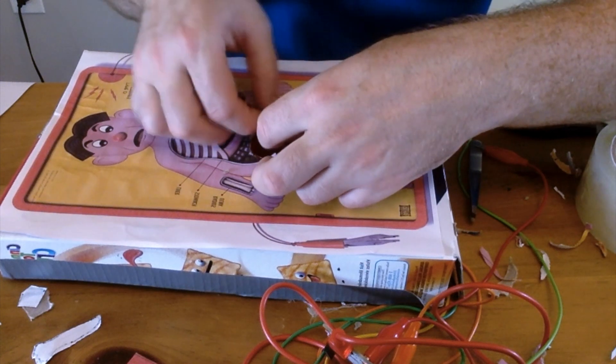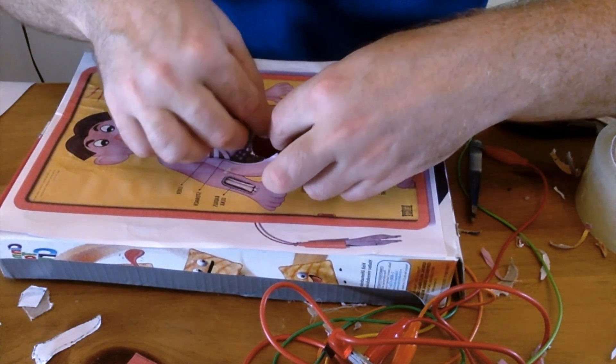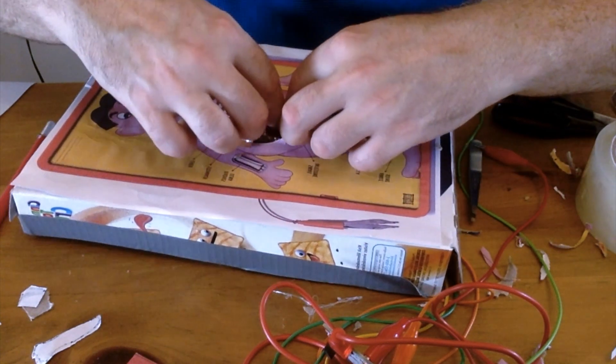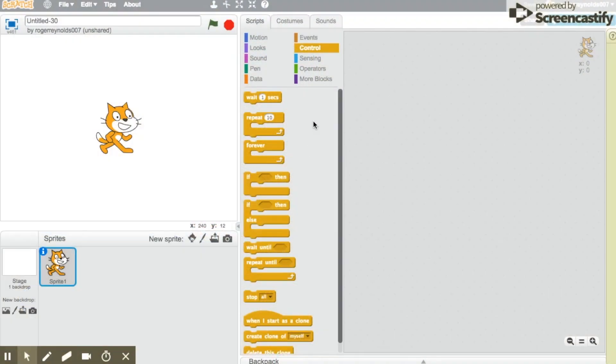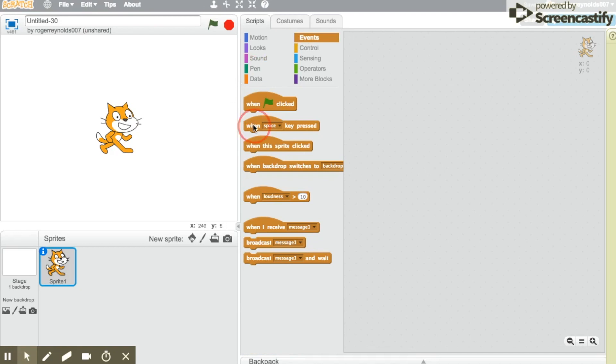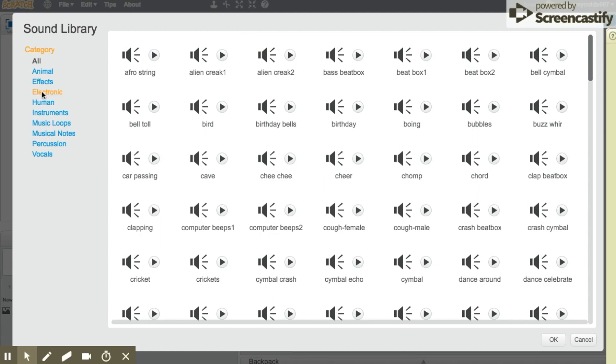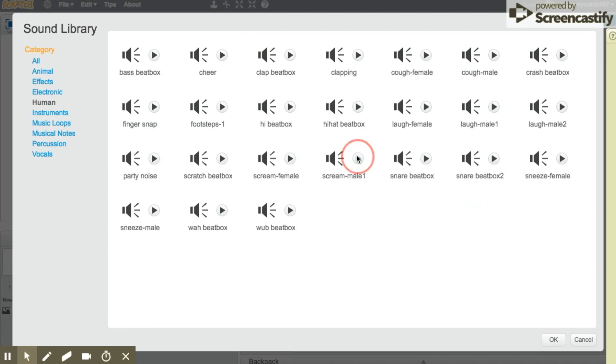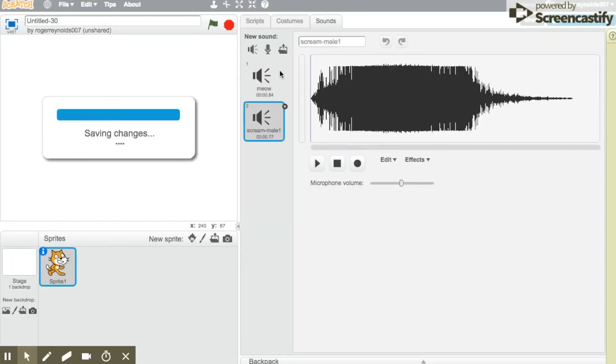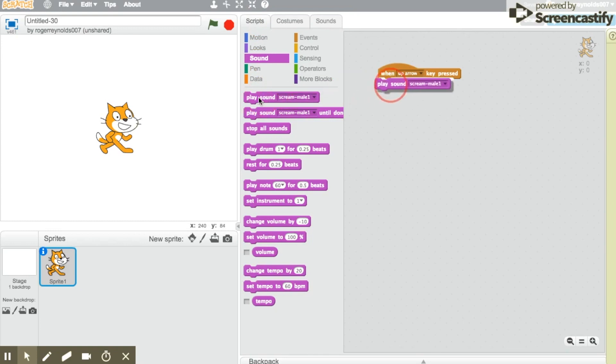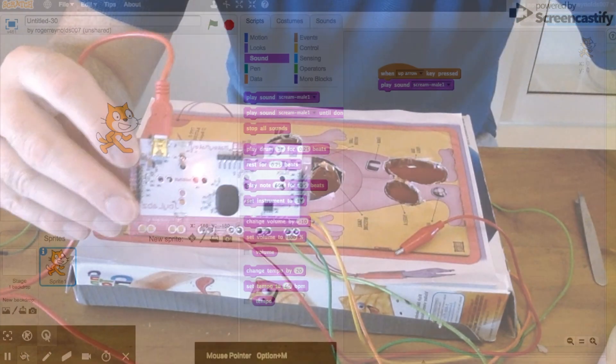I'll write a super simple code for operation because all we really want to do is when the up arrow key is pressed—because I hooked the tweezers up to the up arrow on the Makey Makey—we're going to get it to play a sound. So if we go to sounds, got a load of sound. We'll pick a human sound. I like that one. Double click on it, back to our scripts. And anytime the up arrow key is pressed, it'll play that scream sound. Perfect.